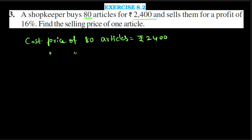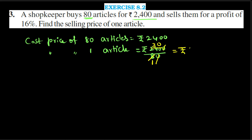From this, cost price of one article equals Rs. 2400 divided by 80. Cancelling zeros, we get 2400/80 = 30. So the cost price of one article equals Rs. 30.